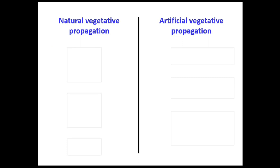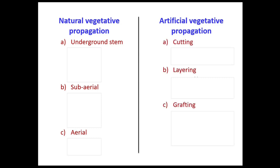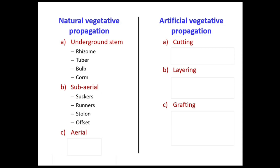Under natural vegetative propagation there are three subcategories: underground stem, sub-aerial, and aerial. Under artificial vegetative propagation we have cutting, layering, and grafting. Underground stems are further divided into rhizome, tuber, bulb, and corm. Sub-aerial includes sucker, runner, stolon, and offset. These may be asked in exam questions.